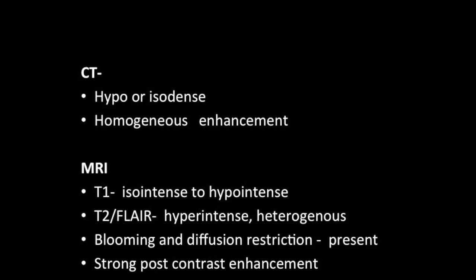On CT scan these lesions appear iso- to hypodense and may show homogeneous enhancement. On MRI they appear iso- to hypointense on T1-weighted images, hyperintense or heterogeneously hyperintense on T2 and FLAIR images, and may show few areas of restricted diffusion or blooming on DWI and GRE images respectively. If they bleed, they can cause intraventricular hemorrhage, and they usually show strong post-contrast enhancement. If the lesion is large, it may sometimes cause hydrocephalus.